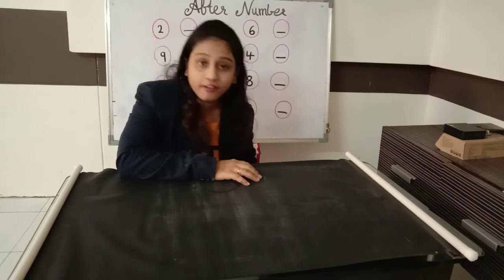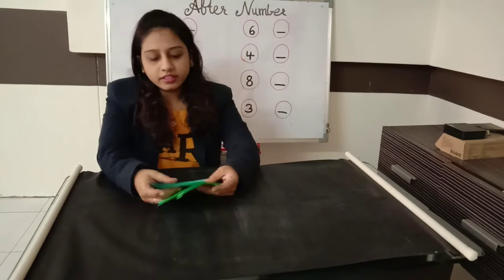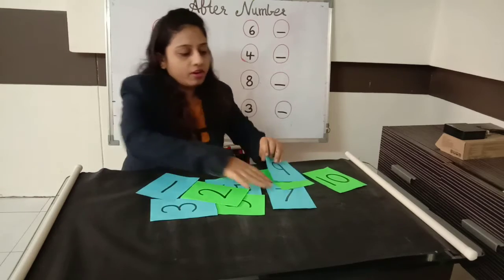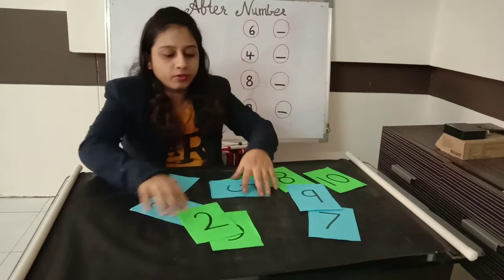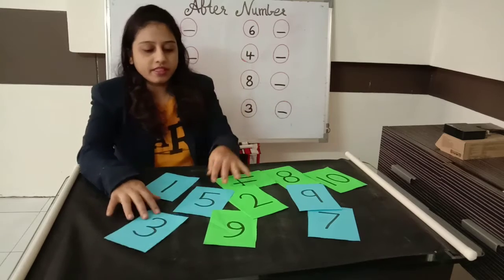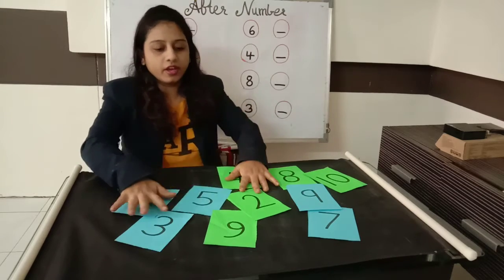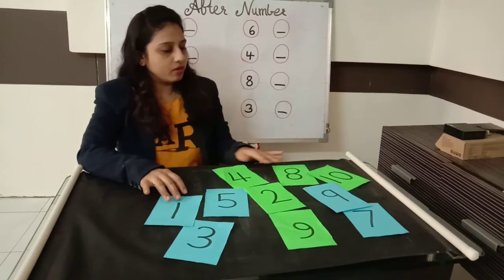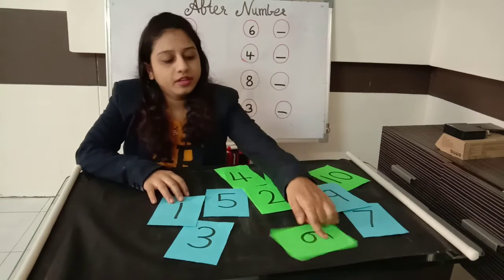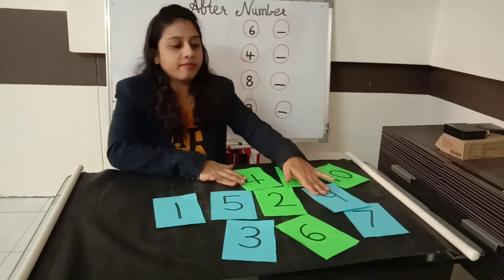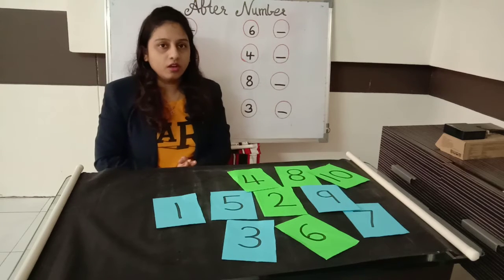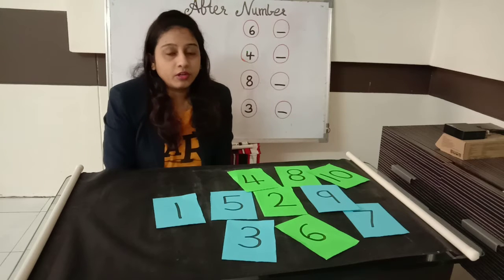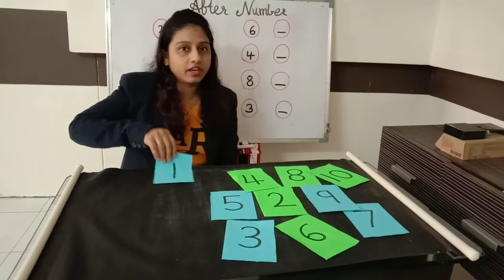Today we are going to learn the after number. See, first of all, we will play one game. I have numbers here, 1 to 10 numbers. We will arrange them in a line. You have to help me. First of all, which number do we take first in 1 to 10?